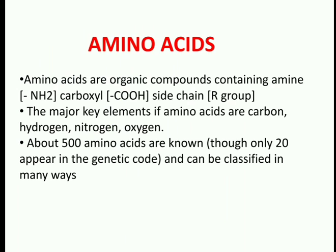Moving to the introduction part: amino acids are organic compounds containing an amine group (NH2), a carboxyl group (COOH), and a side chain R group. The major key elements present in amino acids are carbon, hydrogen, nitrogen, and oxygen. There are almost 500 amino acids known, but only 20 appear in the genetic code.